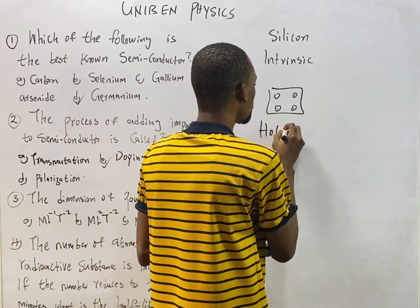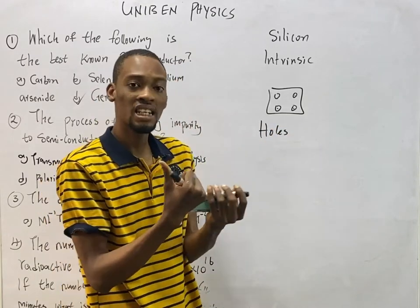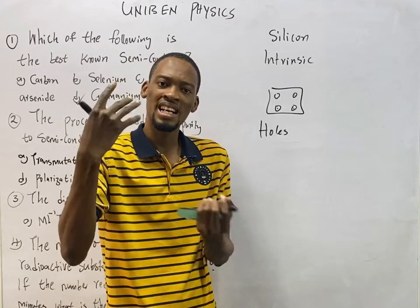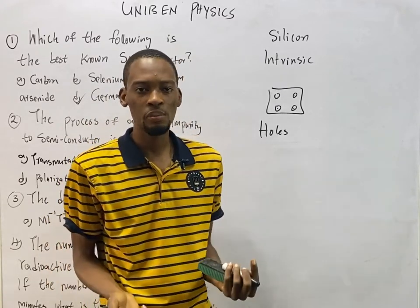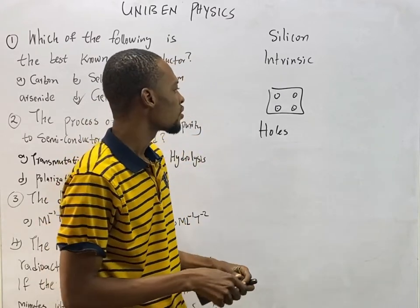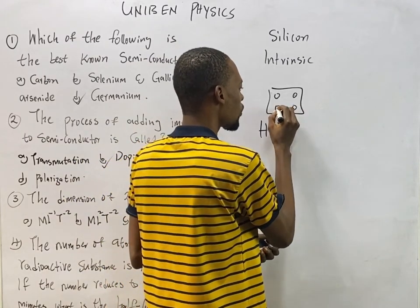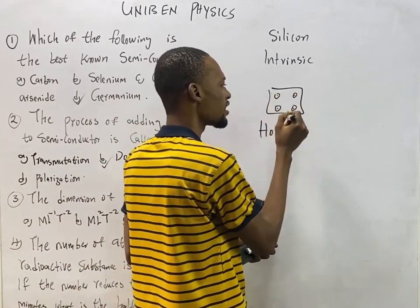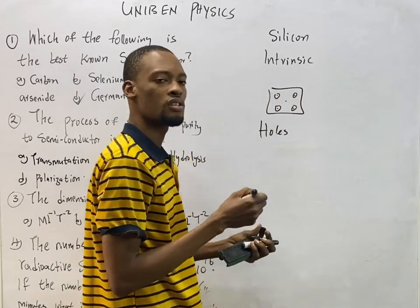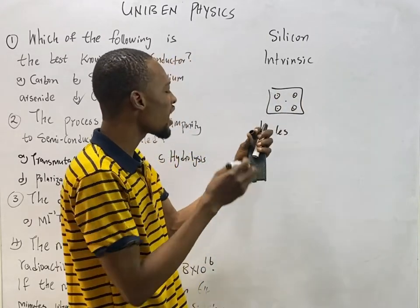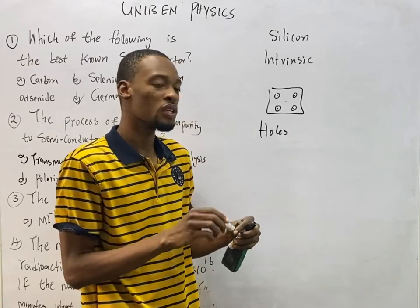When doping with pentavalent impurities — elements that have five electrons in the outer shell — one electron covers here, one here, one here, and one electron remains. So we have more electrons than holes. We call this an n-type semiconductor.